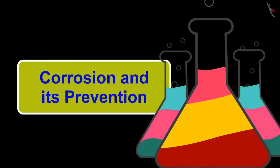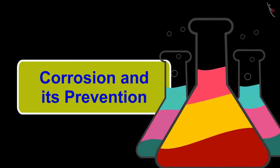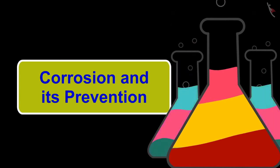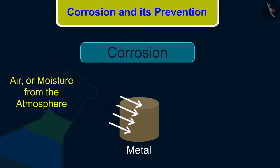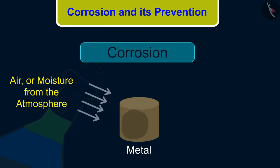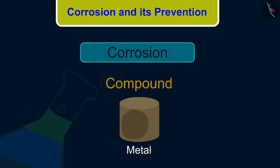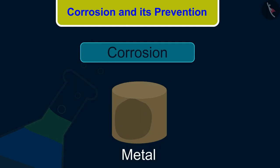Welcome to this video session. The topic that we are going to cover in this session is corrosion and its prevention. Do you know that if a metal is reactive, its surface may be slowly attacked by the air or moisture from the atmosphere? The metals react with oxygen present in air and form a compound on its surface. The formation of such a substance tarnishes the metal. That is, it makes the surface of the metal appear dull.